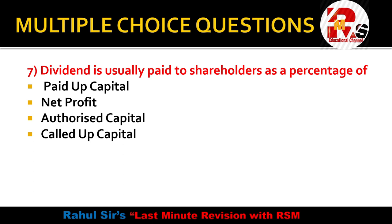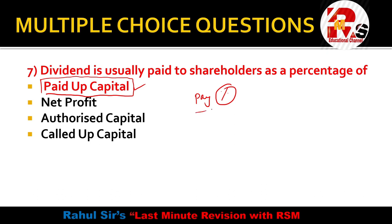Question 7: Dividend is usually paid to shareholders as a percentage of — paid-up capital, net profit, authorized capital, or called-up capital? The company pays dividend to preference shareholders at a fixed rate, and for equity shareholders the percentage is decided at the Annual General Meeting. Always remember: dividend is calculated on paid-up capital. The right answer for question 7 is paid-up capital.